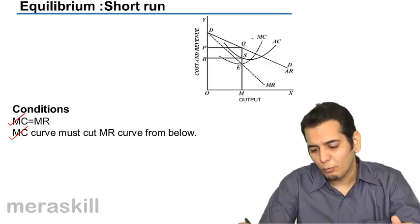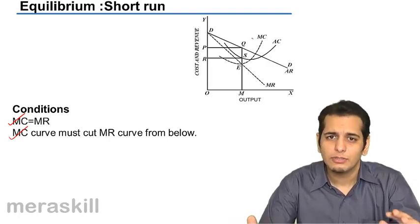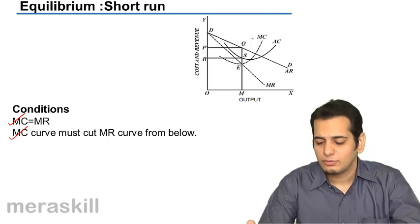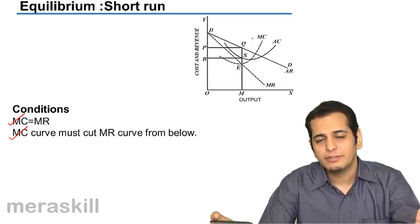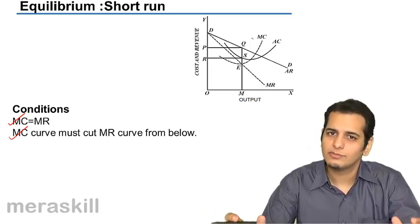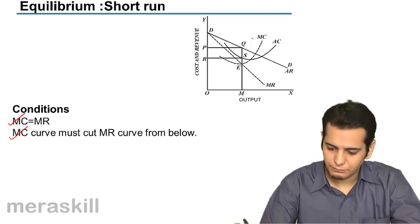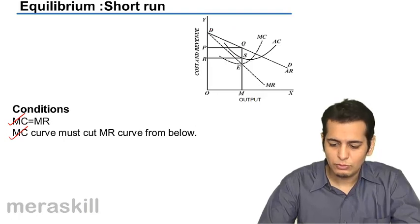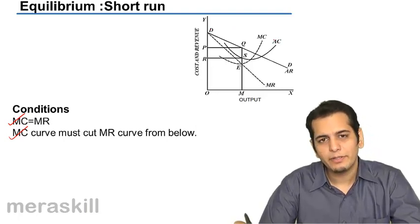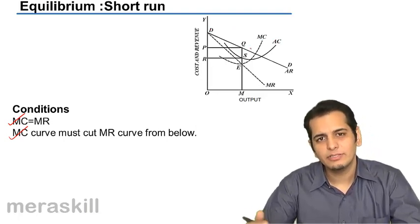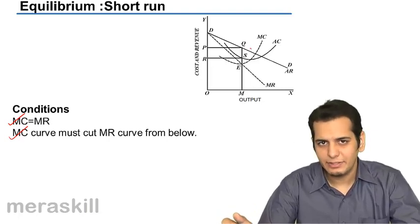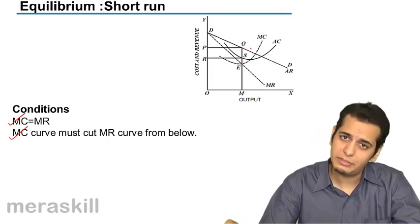So, if you want the derivation of the curve, you can refer the section wherein we derive the shape of the curve under monopoly because it's completely same. Both are downward sloping and MR curve is inside the AR curve or the demand curve.